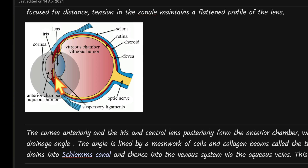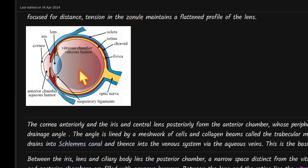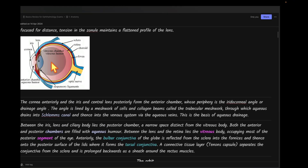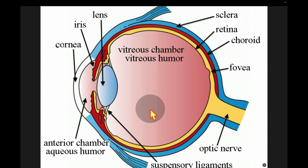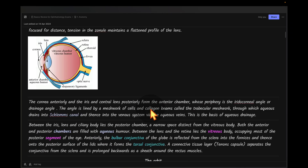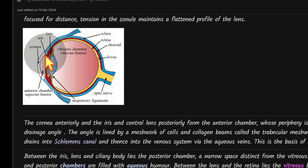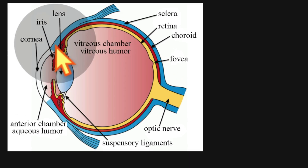Between the iris, lens, and ciliary body is the posterior chamber — a very narrow space. Between the lens and the retina is the vitreous body, which constitutes the posterior segment of the eye.